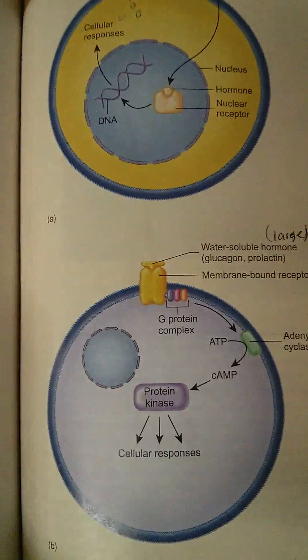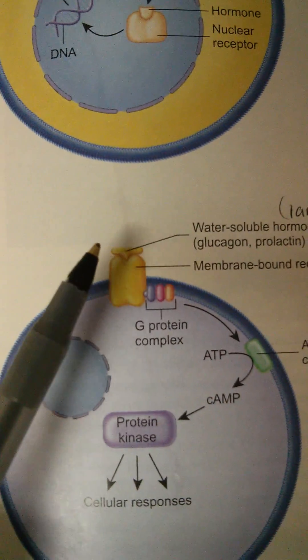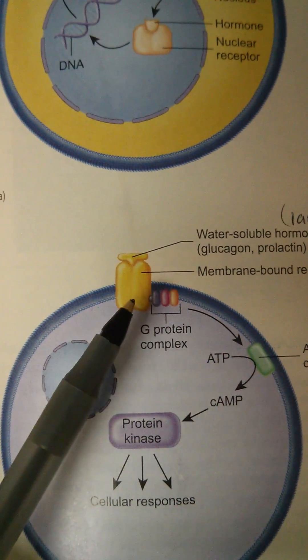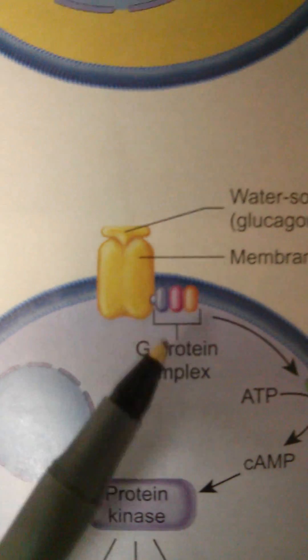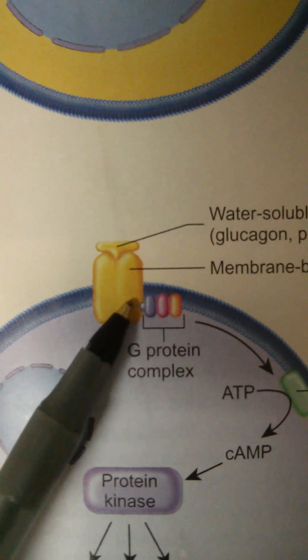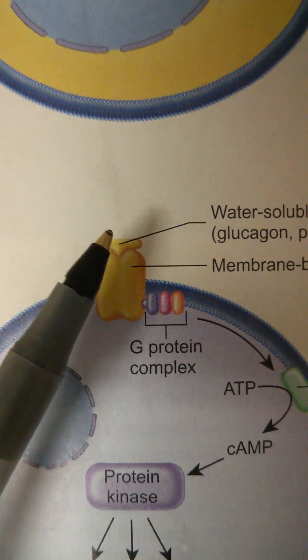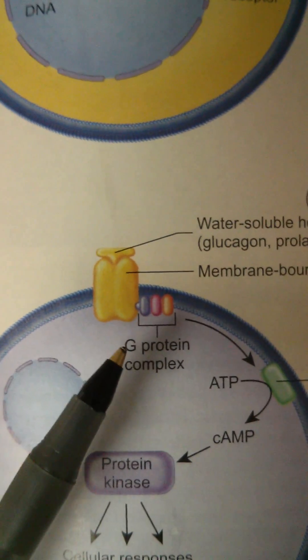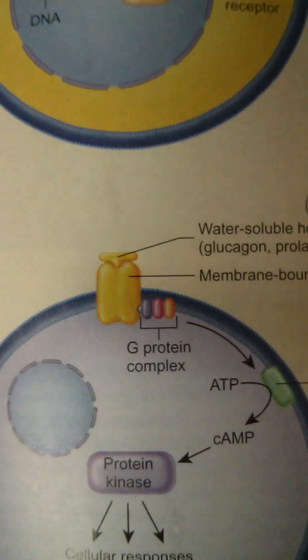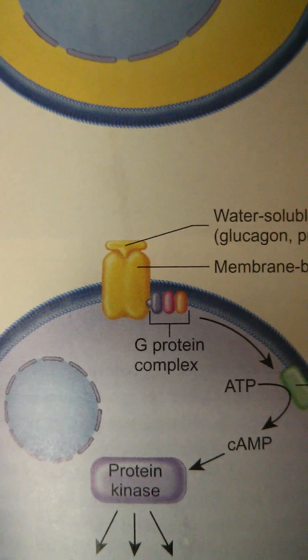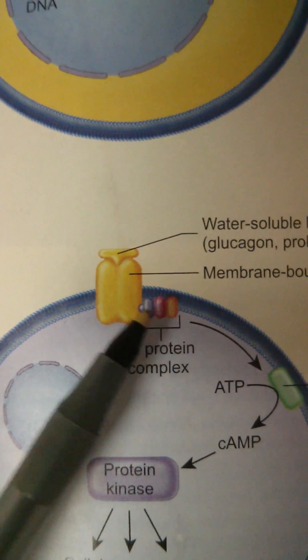And then what happens is once the hormone binds to the receptor, it activates what's called the G-protein because it's attached. So when it actually makes that connection, it activates it. Now I like to think of the G-protein as the group protein, G for group, just because it consists of three parts.